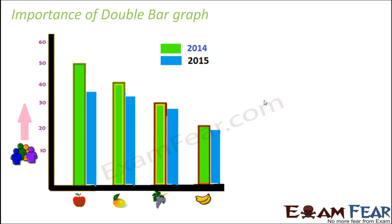The question is: what is the importance of a double bar graph? One obvious importance is that it can represent two sets of data simultaneously — for example, the data for 2014 and 2015 together in the same graph. The other benefit is that it helps us do a comparative study of data for two different but related sets of data.